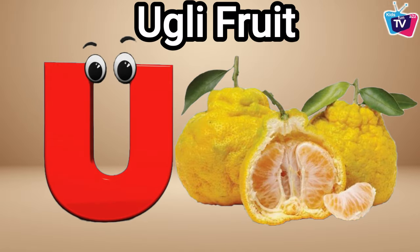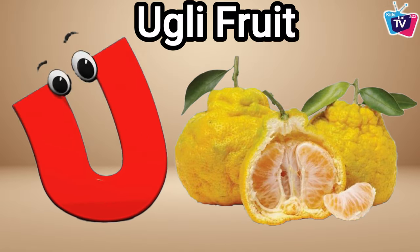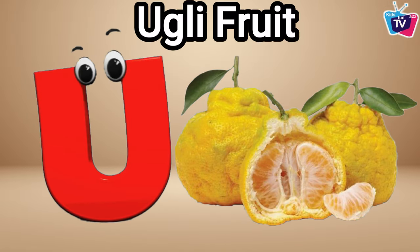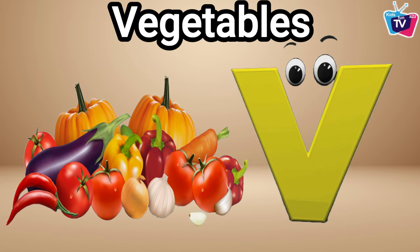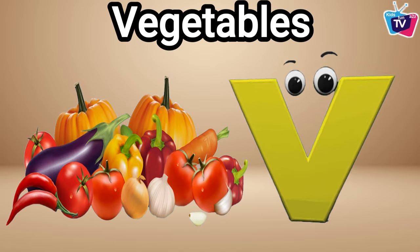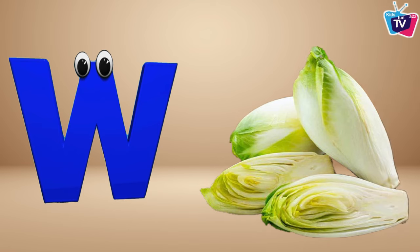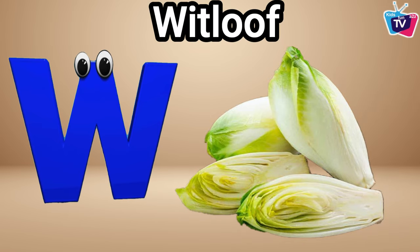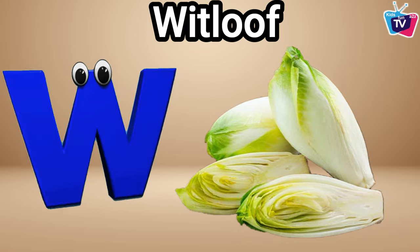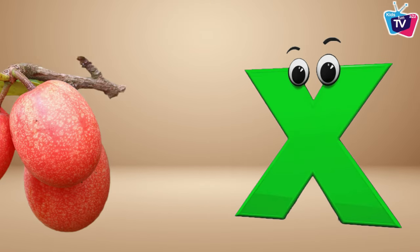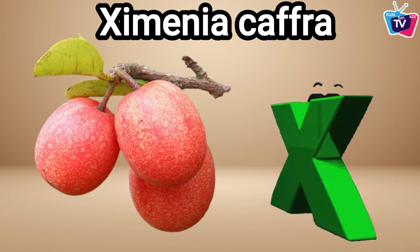U is for ugly fruit, ugly fruit. V is for vegetables, vegetables. W is for witloof, witloof.